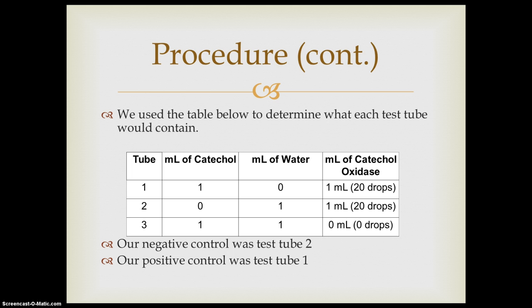Test tube three would have one milliliter catechol, one milliliter water, and no catechol oxidase. Our negative control group was test tube two. My positive control group was test tube one.